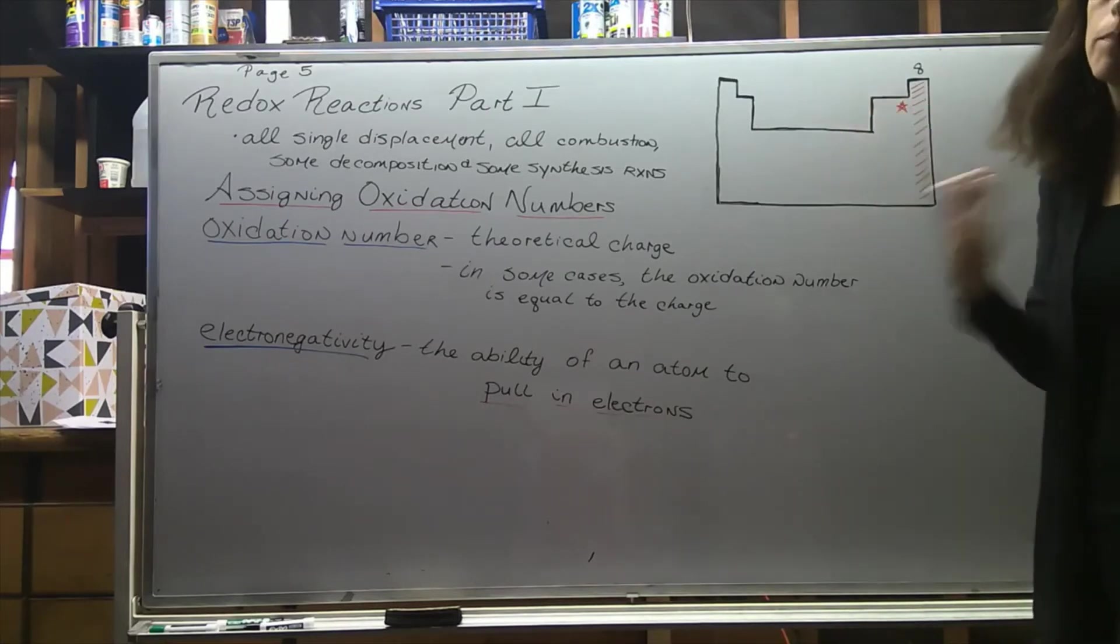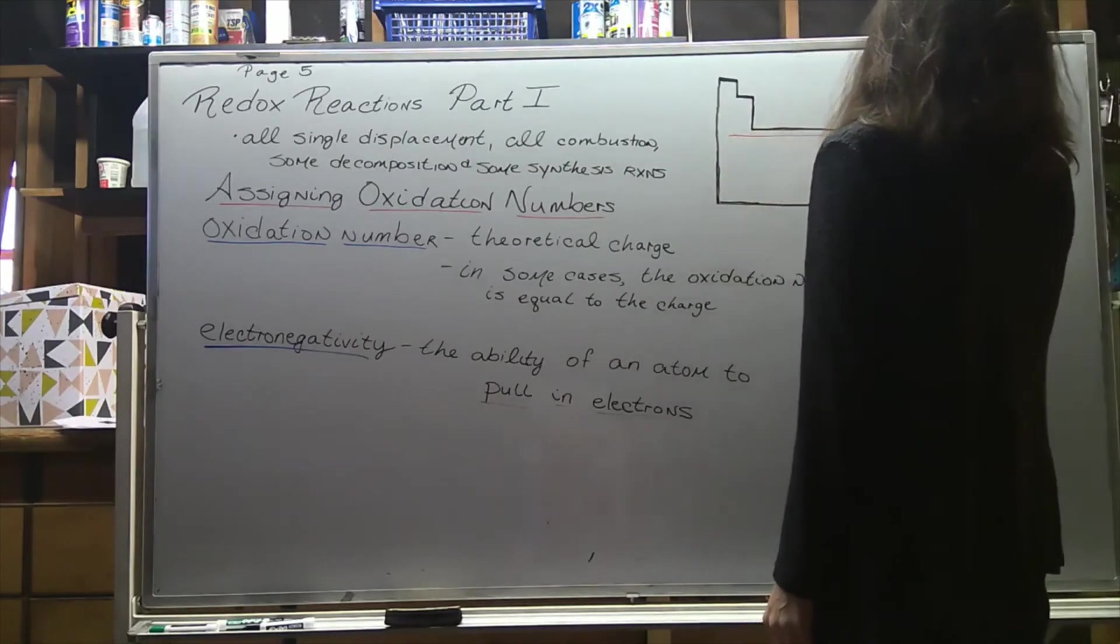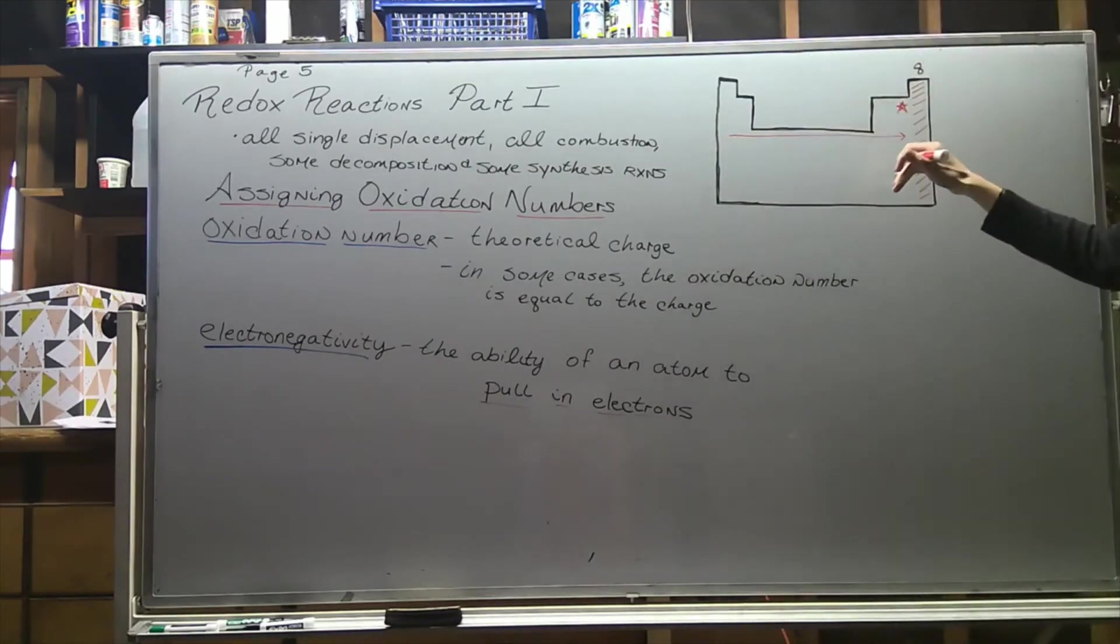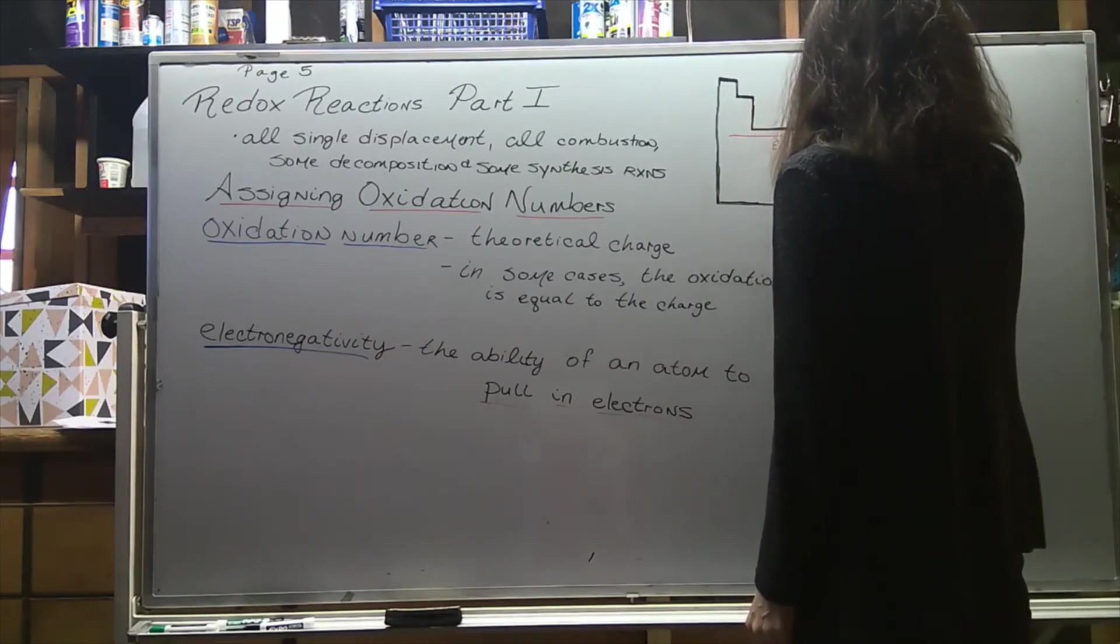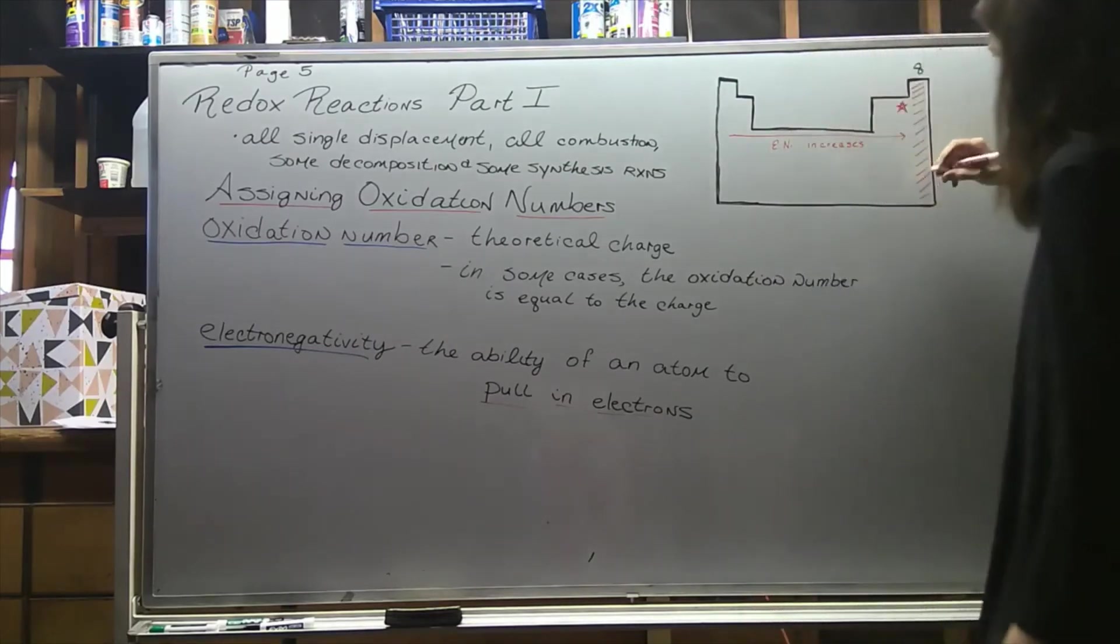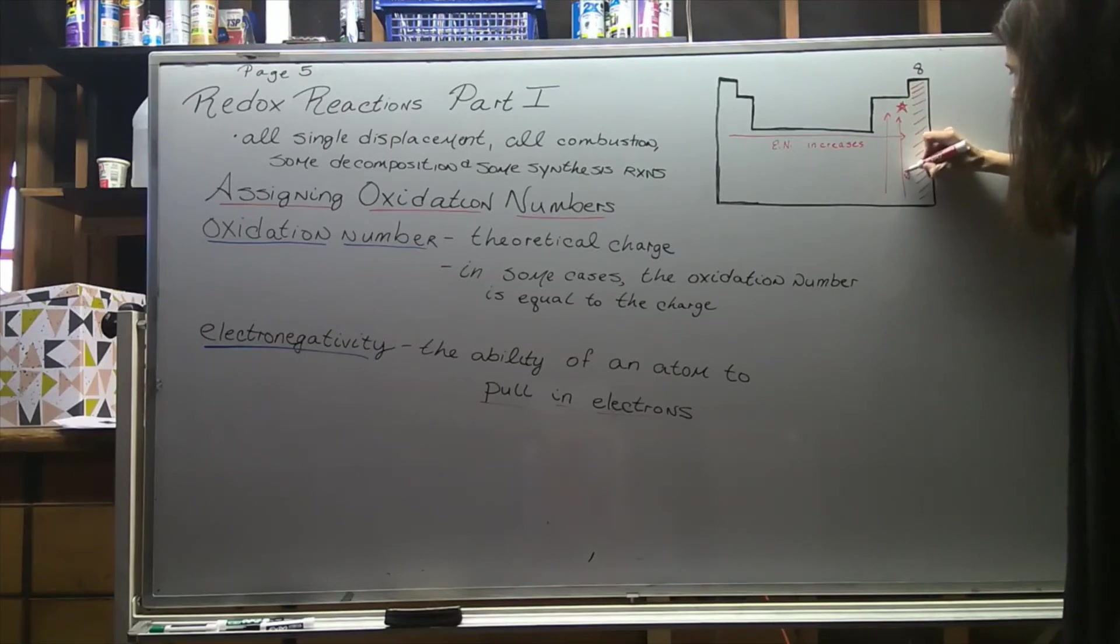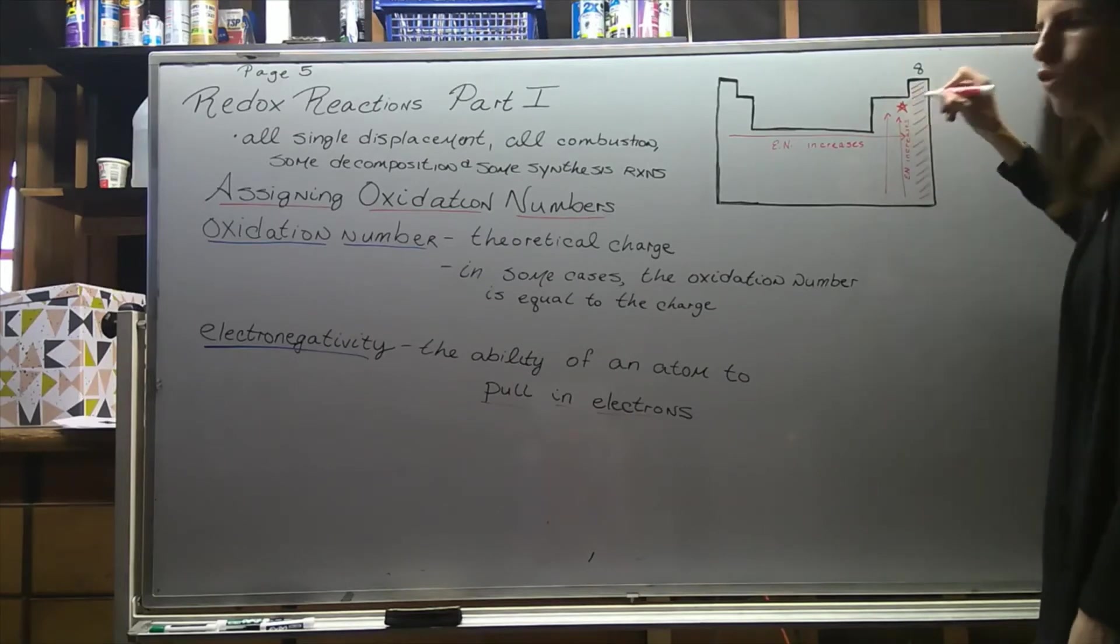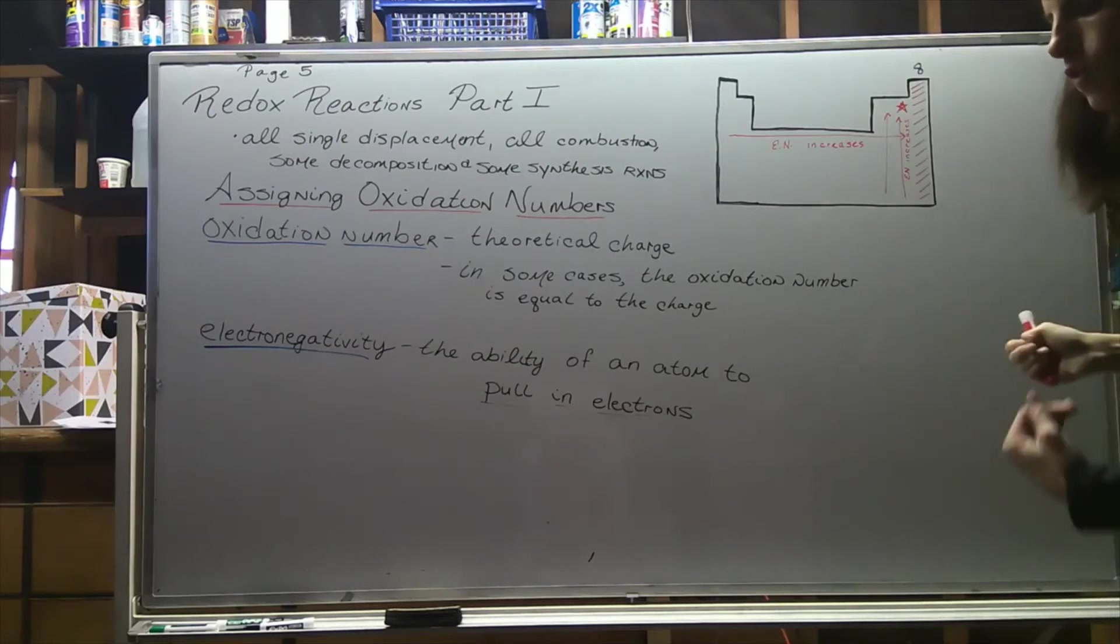Chemists will use what's called a periodic trend. As we go across any row in the periodic table, electronegativity increases. Likewise, as we go up any group in the periodic table, electronegativity increases.